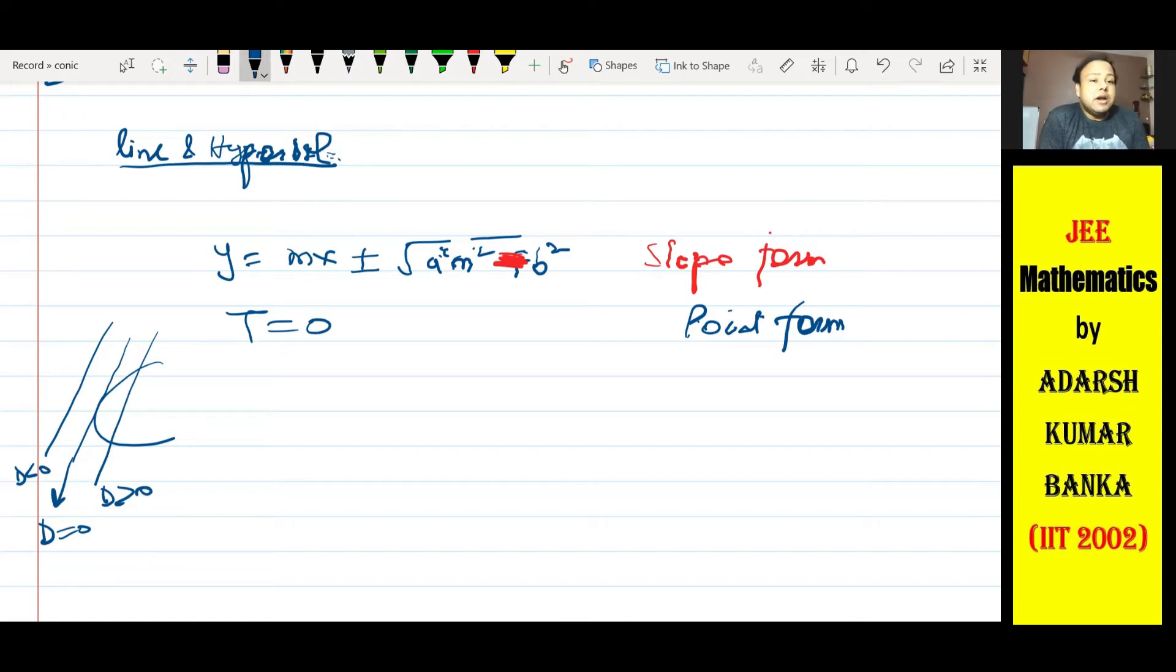T equals zero kya hota hai? T milta hai jab S mein aap kuch transformation karte hain. S kya hota hai? S hota hai pura jo equation hai conic ka, sab kuch ek side lao, which is equal to zero. Jaisa dikhne laghe, that LHS is called S. Us mein x square ka term hoga, y square hoga, x, y hoga, then x, y or constant hoga. Agar main x square ko xx1, y square ko yy1, x ko x plus x1 by 2, y ko y plus y1 by 2, xy ko xy1 plus yx1 by 2, yeh sab mein put karunga, I will get equation of tangent in point form.